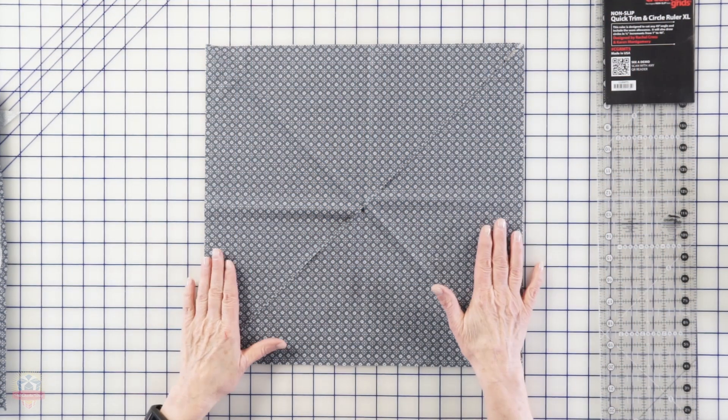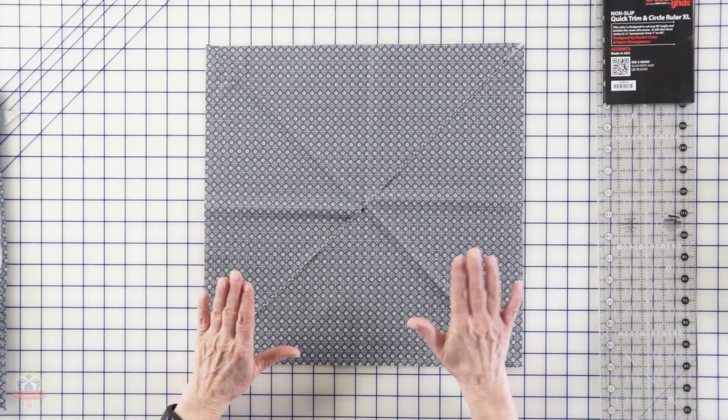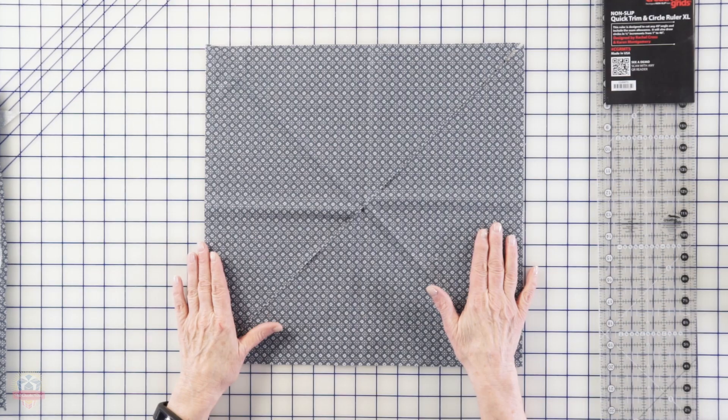Next we're going to prepare our bias binding which will be used to cover all of the raw edges on our seams. This gives your bag a Cadillac finish when you're done and just makes everything look really nice and professional.